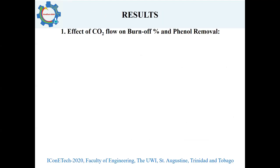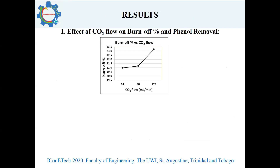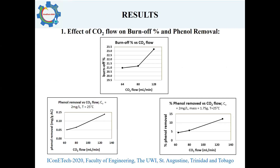Here are the results of my study. I found that as carbon dioxide flow increased, the burn-off percentage increased, as well as the amount of phenol removed. At the maximum carbon dioxide flow rate studied — which was 128 milliliters per minute — I got about 12% phenol removed using a mass of 1.75 grams of activated carbon, which correlated to about 23.25% burn-off. This was the maximum burn-off at maximum flow rate.